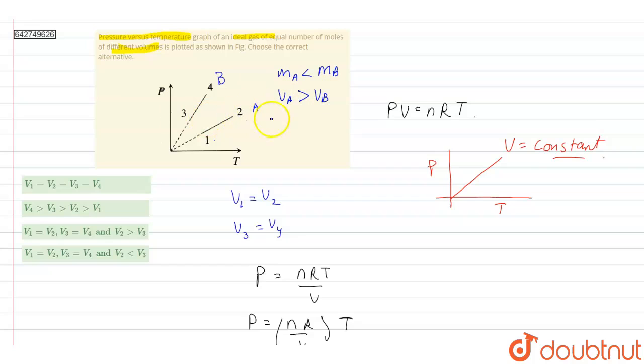This means volume V2 at point 2 will be greater than volume V3. Therefore, from this relation and this relation, we have the correct option as option C.